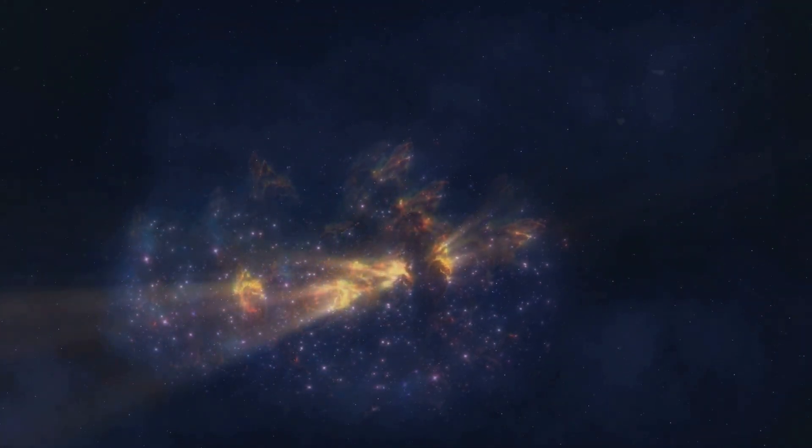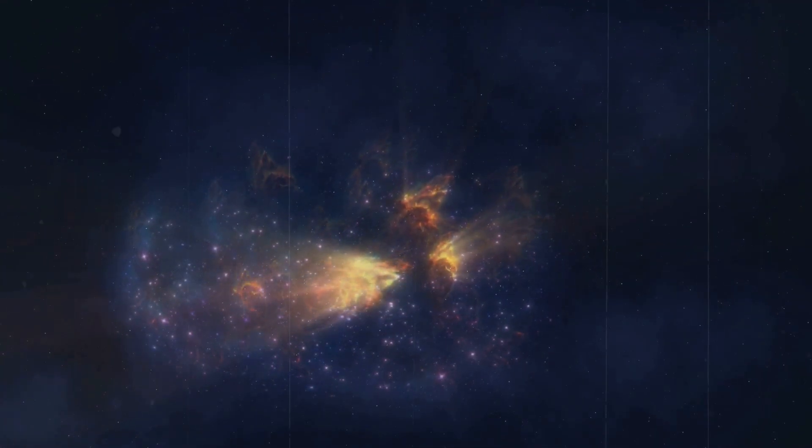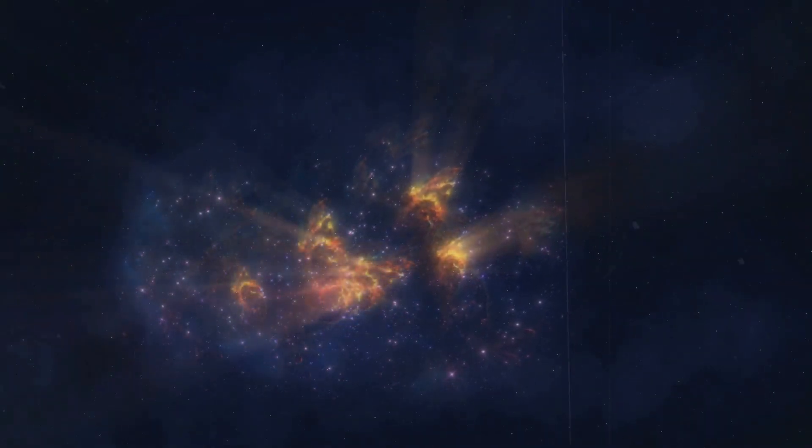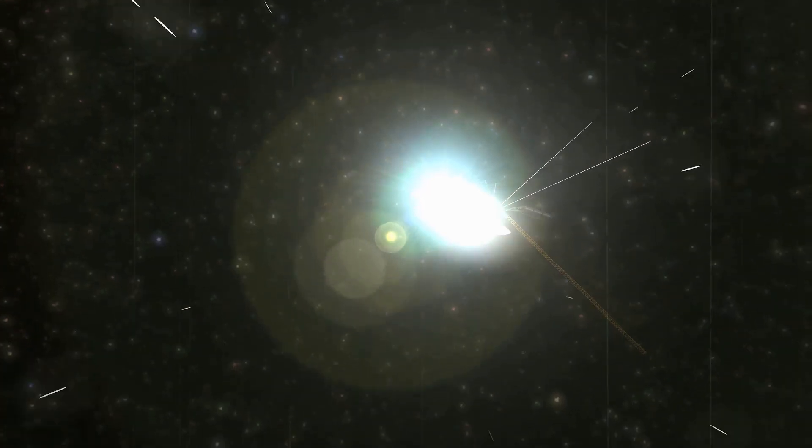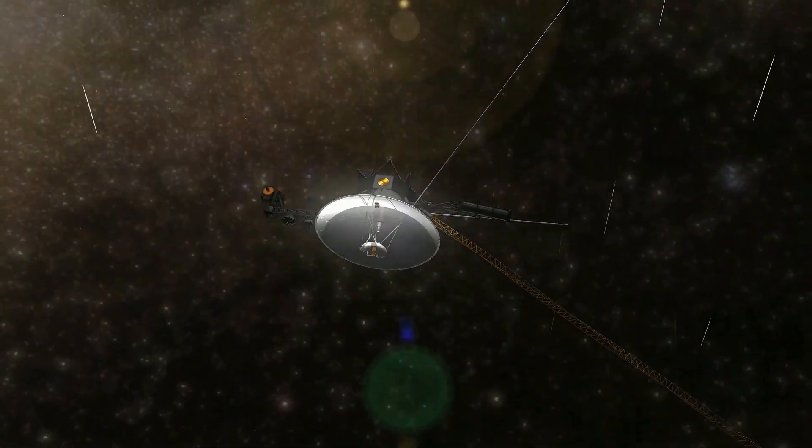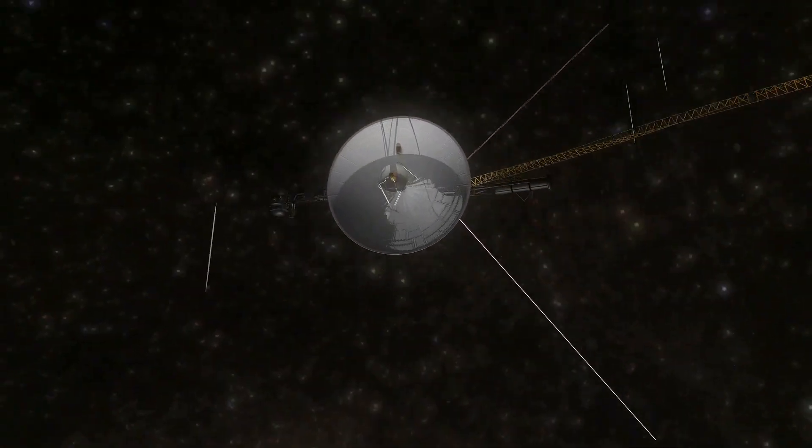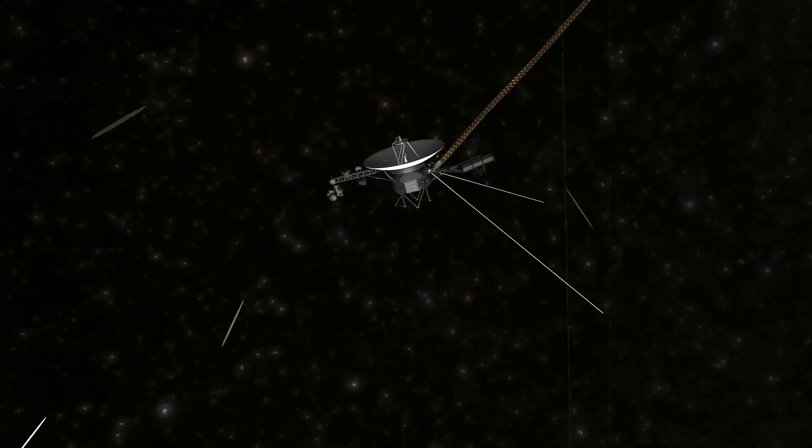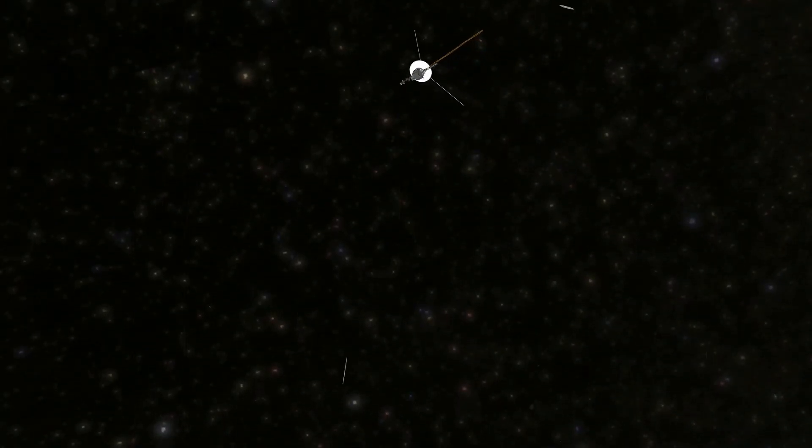That means we are not simply looking across space. We are peering into a past so ancient that entire galaxies have shifted, merged, or died since that light began its journey. If Voyager has truly uncovered a structure of this size, we are seeing an imprint from an era long before earth had even cooled enough for oceans to form.